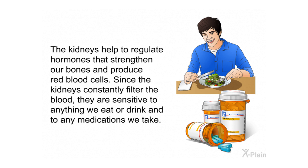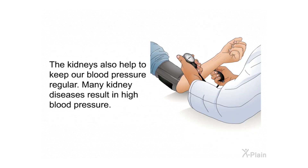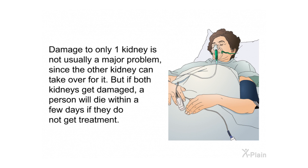The kidneys help regulate hormones that strengthen our bones and produce red blood cells. Since the kidneys constantly filter the blood, they are sensitive to anything we eat or drink and to any medications we take. They also help keep blood pressure regular, and many kidney diseases result in high blood pressure. Damage to only one kidney is not usually a major problem, since the other kidney can compensate. But if both kidneys are damaged, a person will die within a few days without treatment.